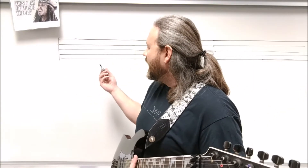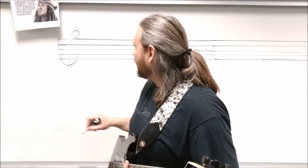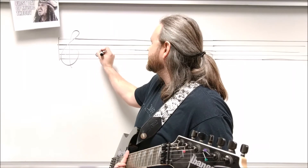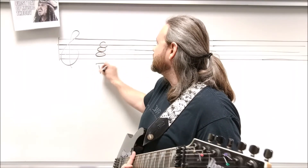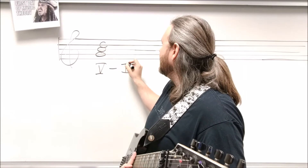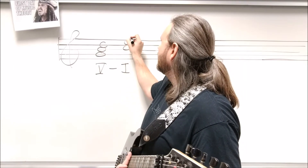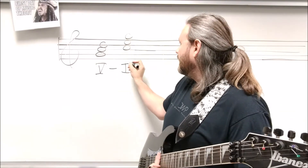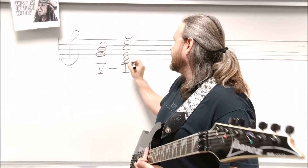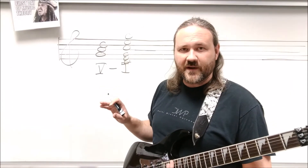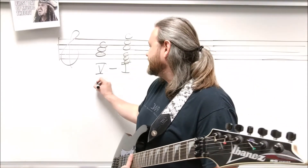The first big type of cadence you need to know is what we call the authentic cadence. If you go back to the chord video, there are seven chords in every key. The fifth chord resolving to the first chord is one of the strongest kinds of cadences we can create. In the key of C, the five chord is G. Going from G to the one chord, C — that resolution is called an authentic cadence.